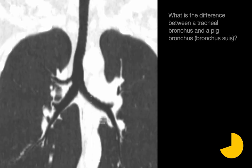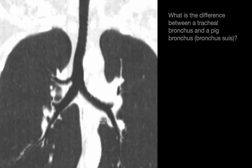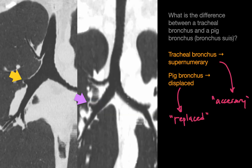What's the difference between a tracheal bronchus and a pig bronchus? Both are airways coming directly off the trachea supplying the right upper lobe, not off the right main stem bronchus. Pig bronchi are special in that the entire right upper lobe is supplied by the pig bronchus, while with tracheal bronchi, a portion of the right upper lobe is still supplied by a conventional right upper lobe bronchus off the right main stem. We can think of a tracheal bronchus as a supernumerary bronchus, while a pig bronchus is an entirely displaced right upper lobe bronchus — analogous to an accessory versus a replaced bronchus in arterial vascular nomenclature.